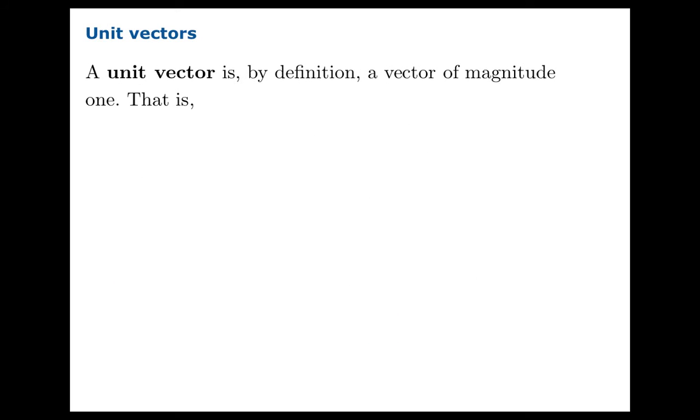A unit vector is, by definition, a vector of magnitude 1. So u is a unit vector if and only if the norm is 1.